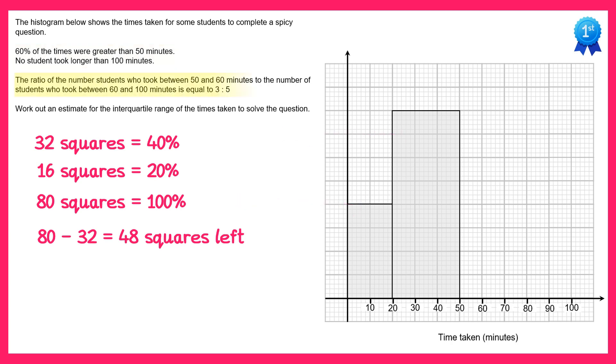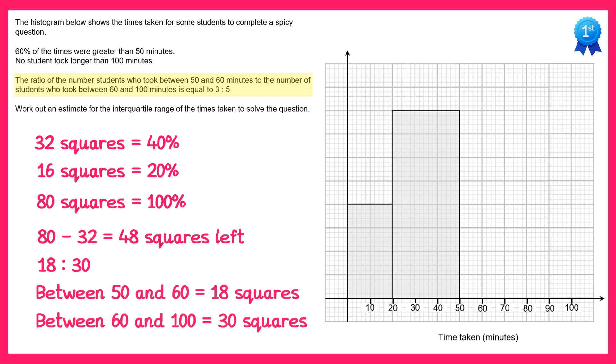Next in the question we're told the ratio of the number of students who took between 50 and 60 minutes to the number of students who took between 60 and 100 minutes is the ratio 3 to 5. So if we share these 48 squares into the ratio 3 to 5, we get 18 to 30. This means the number that took between 50 and 60 minutes is 18, and the number that took from 60 to 100 minutes is 30. So we need to draw 18 squares from 50 to 60, and 30 squares from 60 to 100.